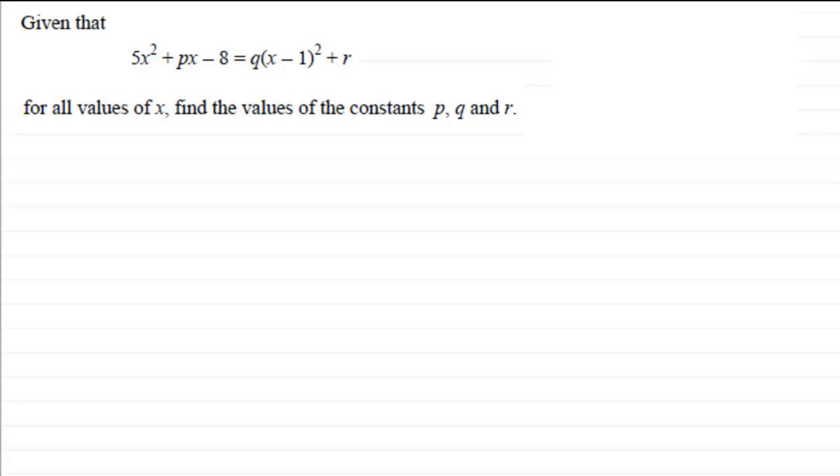Okay, welcome back. Now with something like this, this is not really an equation. It's got equals here, but I don't like to use this equals. I like to think of this as an identity because it's true for all values of x. So I'm going to write 5x² + px - 8 is identical to q(x - 1)² + r.